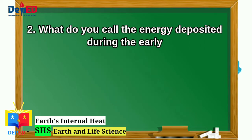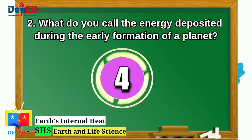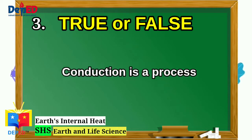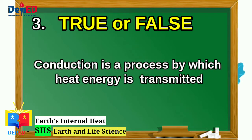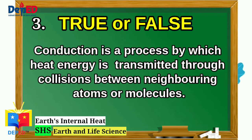Number 2: What do you call the energy deposited during the early formation of a planet? Number 3: True or false — Conduction is the process by which heat energy is transmitted through collisions between neighboring atoms or molecules.